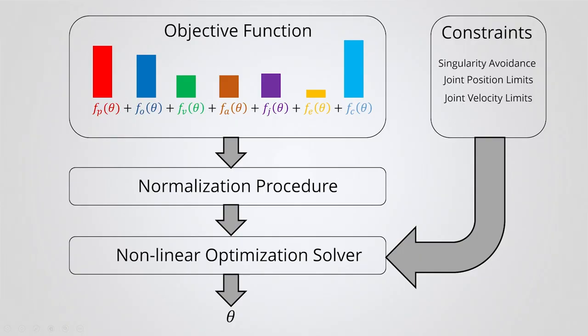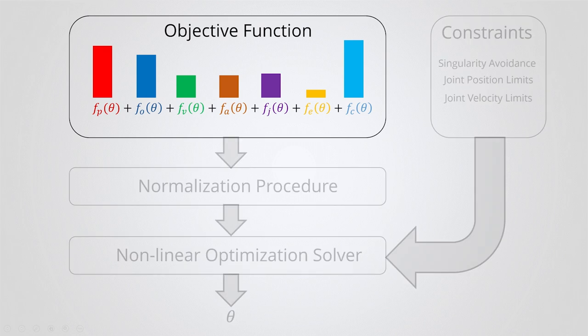To achieve these numerous objectives on the fly, we supplement the standard IK formulation as a weighted sum non-linear optimization problem such that motion goals in addition to end-effector pose matching can be encoded as terms in the sum. We present a normalization procedure such that our method is able to effectively make trade-offs to simultaneously reconcile many potentially competing objectives.